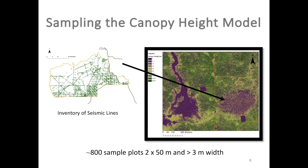Once I had my canopy height model, I then had an inventory of seismic lines which I could sample to look at the regeneration or growth on these lines. I had about 800 sample plots, each 2 by 50 meters wide. I only took lines that were greater than 3 meters in width, because you could get error from the adjacent canopy in LiDAR giving a biased result.